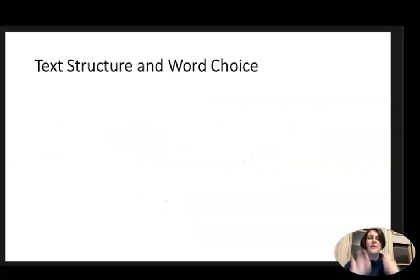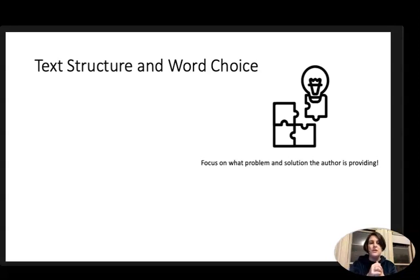When an author picks that specific text structure it's because they want us to focus on specific information. If they're using problem and solution they want us to focus on what that problem is and the solution, how they're going to fix it or how they did fix it. If we notice that text structure we should be looking for that particular problem and solution the author is providing us.